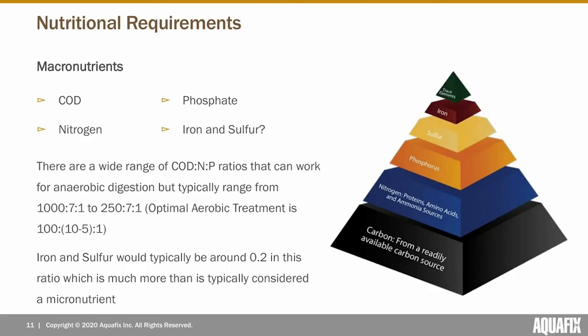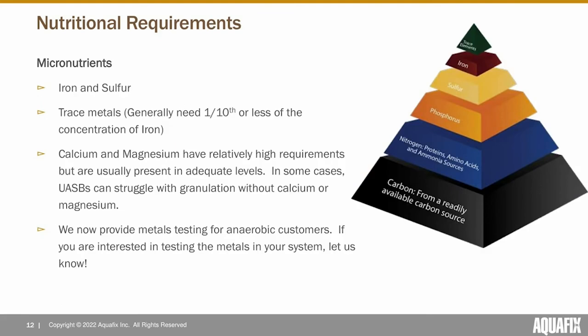In the nutritional pyramid, iron and sulfur are at around 0.2 — quite a bit more than what we'd typically call a micronutrient. The requirements for sulfur are fairly high in anaerobic digestion, but having too much sulfur can be a problem because higher levels favor sulfate-reducing bacteria over methanogens. If you have higher levels of sulfur, you need to feed additional iron into the digester in order to precipitate the sulfur present. Often you do need to supplement iron in order to control sulfur levels.